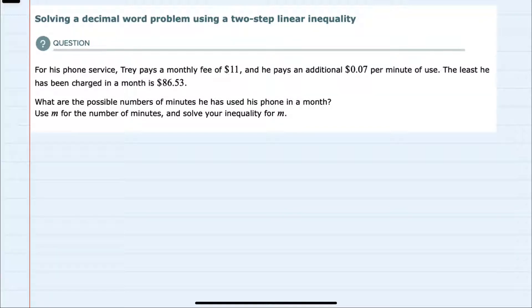From the word problem, we're told that for his phone service, Trey pays a monthly fee of $11, and he pays an additional $0.07 per minute that he uses his phone, and that the least he has been charged a month is $86.53.